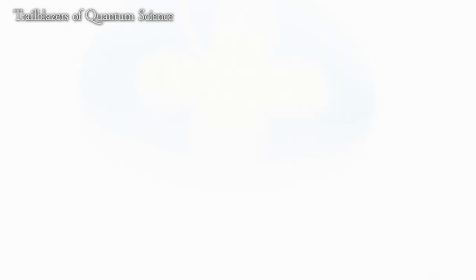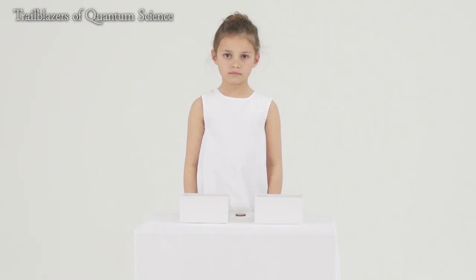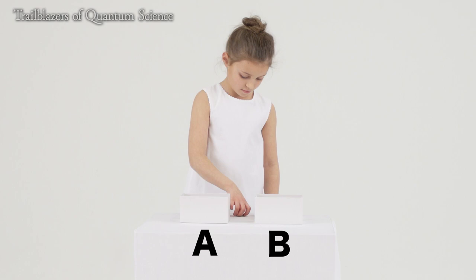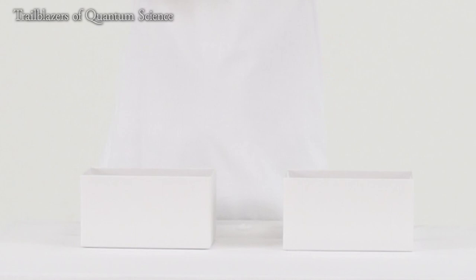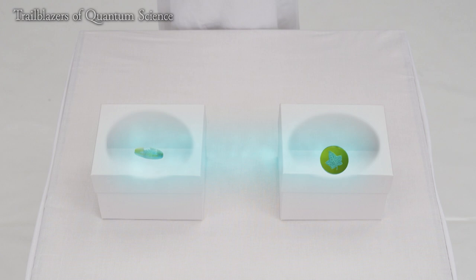However, here is the important part. If boxes A and B each contain a coin with quantum properties, an even stranger phenomenon occurs. If the coins are properly put in the boxes, their states in which heads and tails are superposed can be linked.